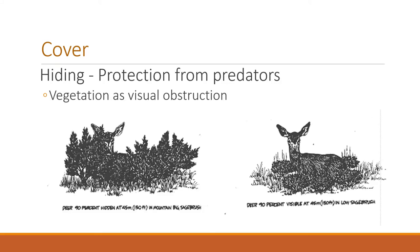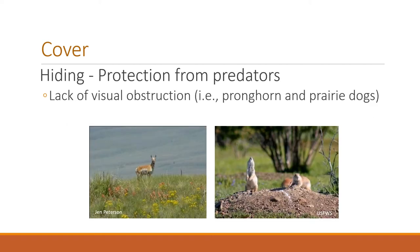The other kind of cover is hiding cover — protection from predators. This comes in two forms. The first is visual obstruction, where an animal hunkers down in vegetation to be unseen. Animals are really good at finding that visual obstruction. However, some animals actually need a lack of visual obstruction to protect themselves from predators — animals like pronghorn and prairie dogs work hard to stay out in the open so they can see predators coming. So good cover from predators can actually be the lack of cover, depending on the animal's life strategy.